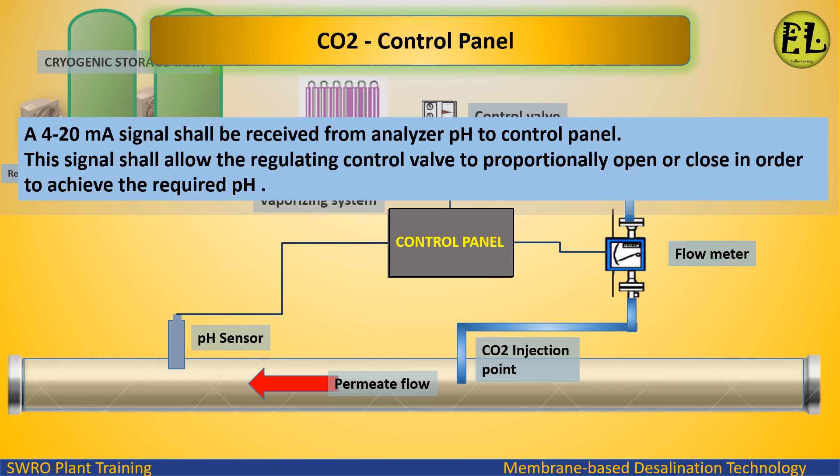A 4 to 20 milliampere signal from the pH analyzer is received by the CO2 control panel. This signal allows the regulating control valve to proportionally open or close in order to achieve the required pH.